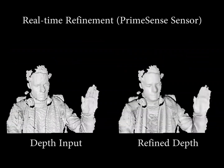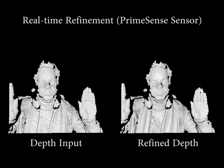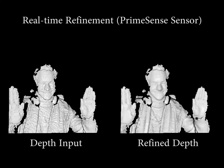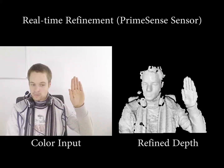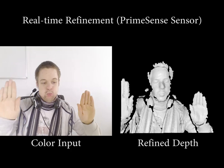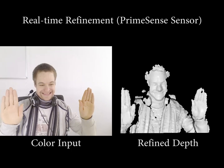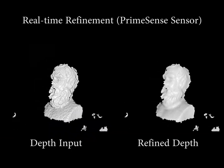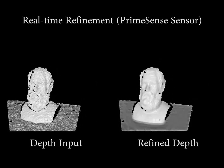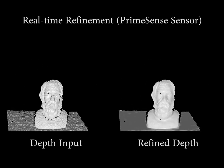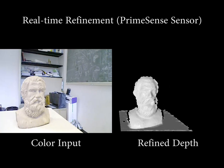Our per-frame depth map refinement can be readily applied to dynamic scenes. Here, we capture a statue of Socrates. Please note that the input RGB image is only at VGA resolution, but we still capture a great amount of detail.